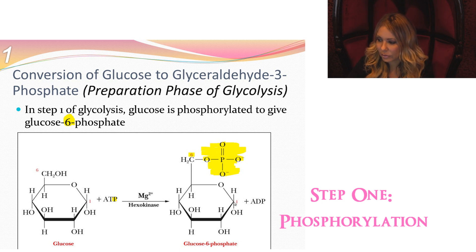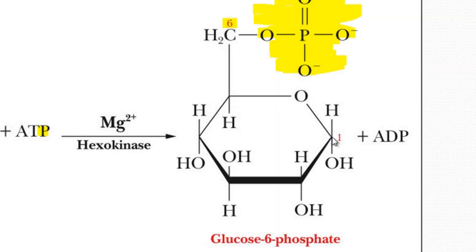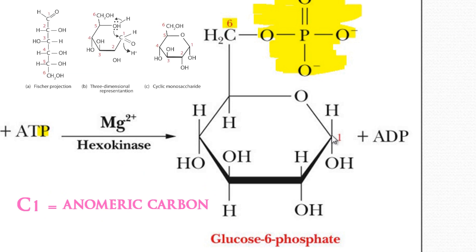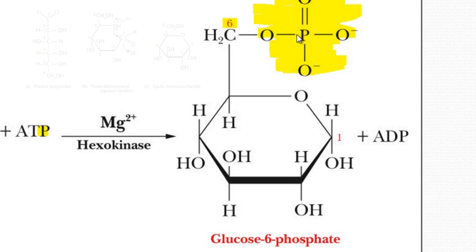If you look at how to number these carbons, we're going to call carbon number one, which used to be an aldehyde in this case of an aldose sugar. This is carbon number one, which is our anomeric carbon. And we go from here: one, two, three, four, five, six. This is carbon number six, and the phosphate group is going to be attached there.